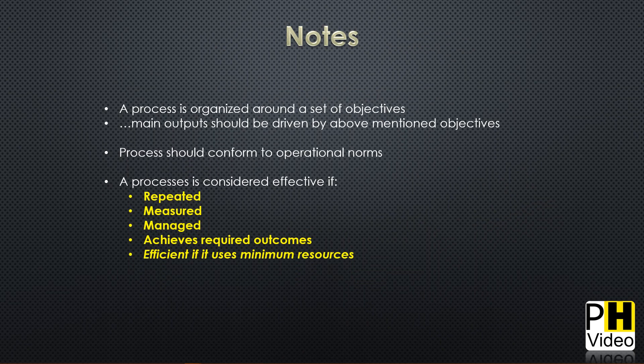A process is organized around a set of objectives. Main outputs should be driven by those objectives — why does the process exist? Processes should conform to operational norms. A process should be considered effective only if it's repeatable, measurable, managed, and achieves required outcomes. It should be efficient — using minimum resources. A quick note on process improvement: many people go for the 'low-hanging fruit,' the easiest thing to fix. I would say this is not a good approach.